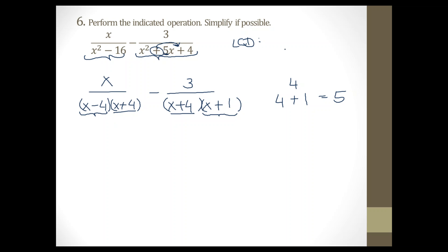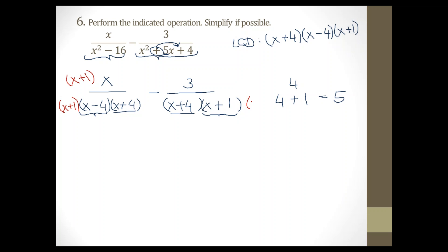The least common denominator is a combination of all pieces: both have x plus 4, one has x minus 4, and the other has x plus 1. So LCD = (x+4)(x-4)(x+1). Now I multiply the left side by what's missing: the left side is missing x plus 1, so multiply top and bottom by (x+1). The right side is missing x minus 4, so multiply the right side top and bottom by (x-4).